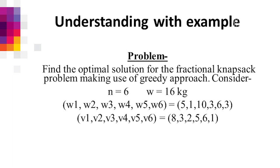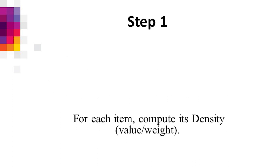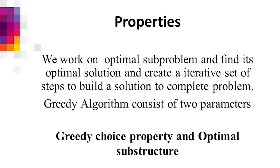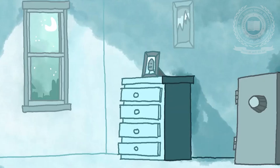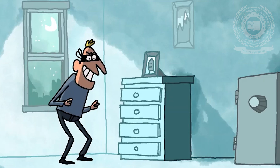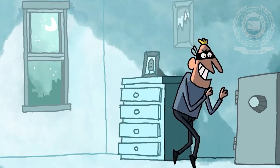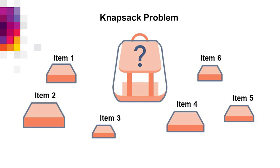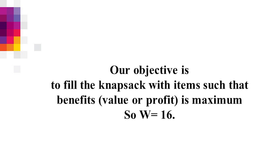How do we do this? We find the density for every item and select elements according to density. As we use the greedy approach, we select based on greedy choice property and optimal substructure. In this problem, a thief tries to steal items and keep them in a bag. Let's assume he has a bag that can carry up to 16 kg and there are 6 items to select.